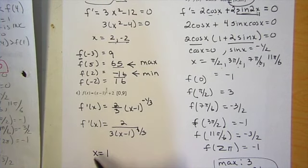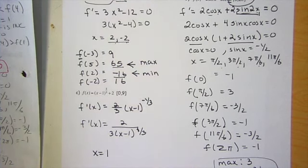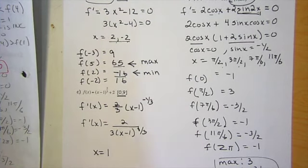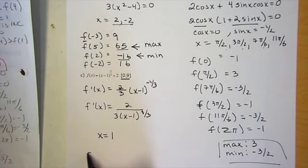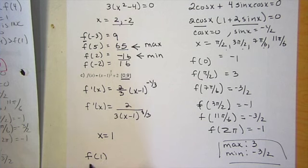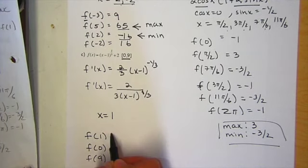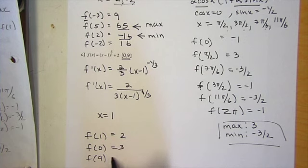So that means on the original graph, there's actually a cusp going on here. And then these are my two endpoints. So I'm going to go ahead and take my critical number and my two endpoints, plug it back into the original function, and you should get 2, 3, and 6. So highest y value is your max value. Lowest is your min.